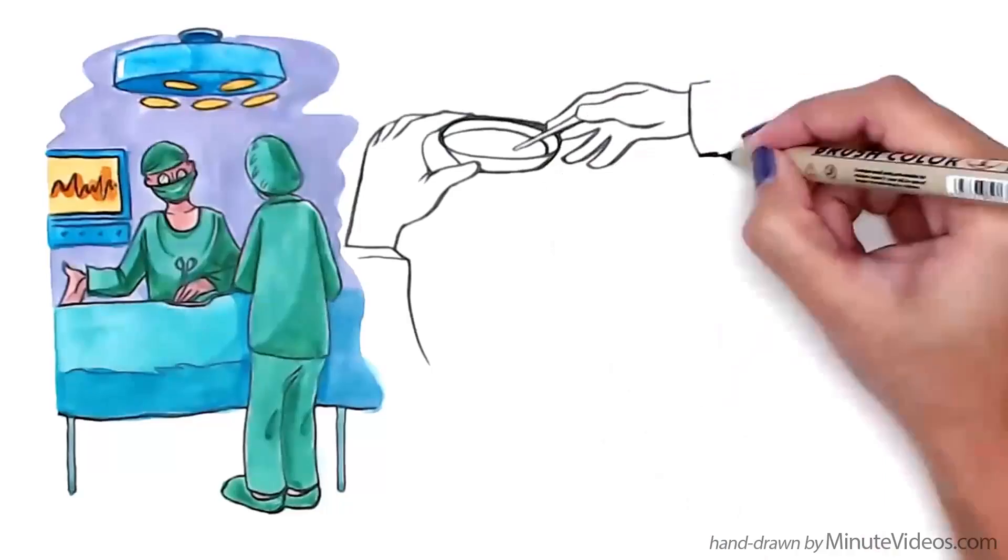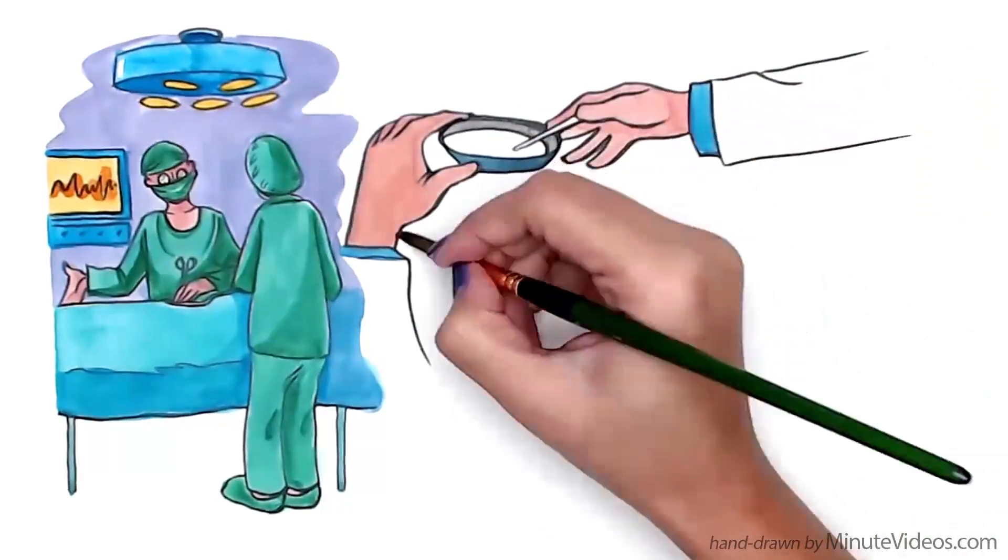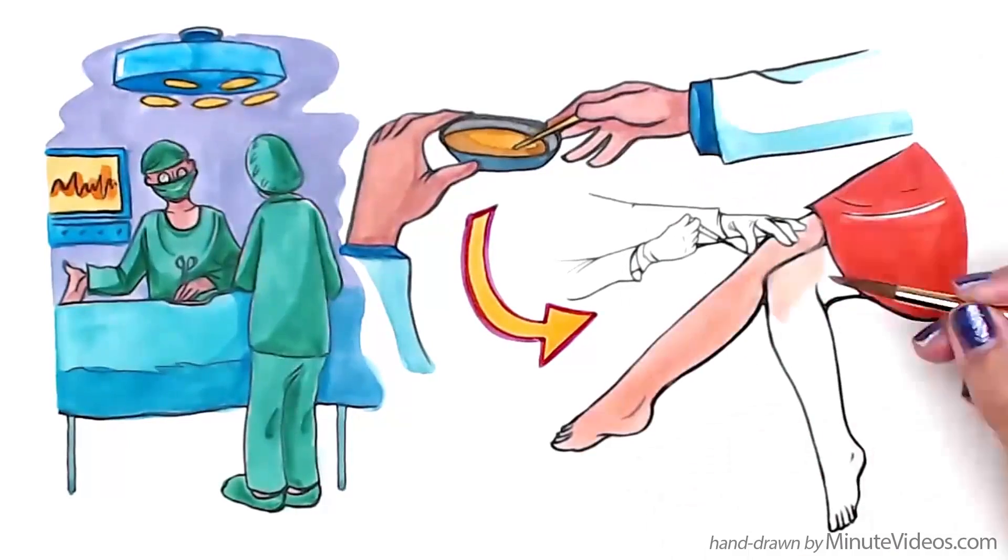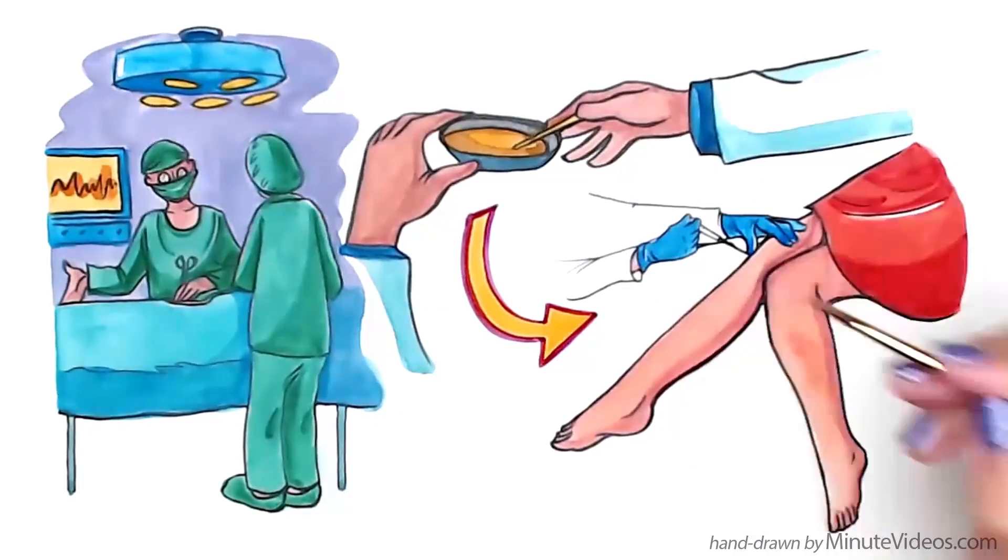In recent years, platelet-rich plasma therapy and stem cells have been used to reduce pain and repair some of the damage caused by osteoarthritis to avoid or delay surgery.